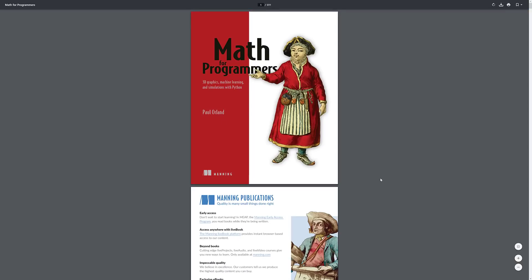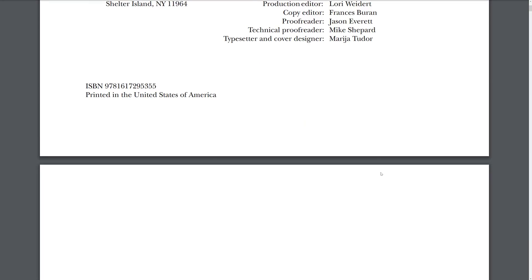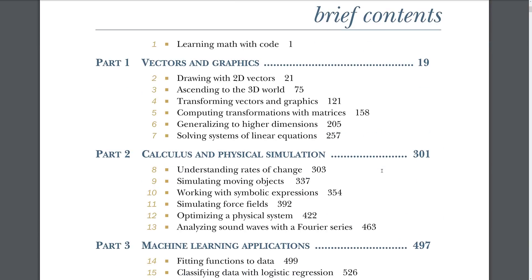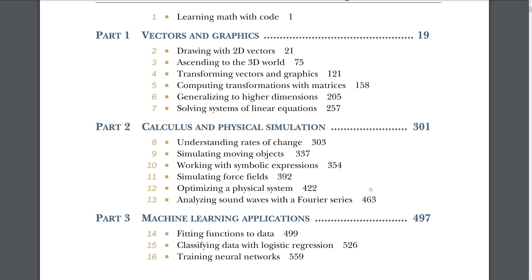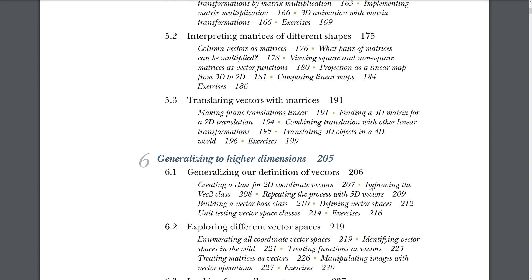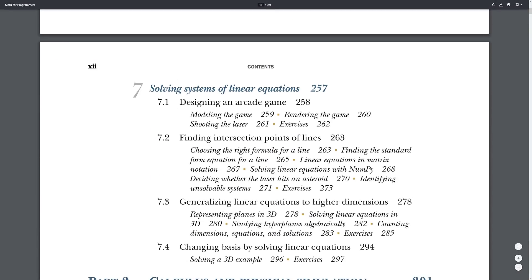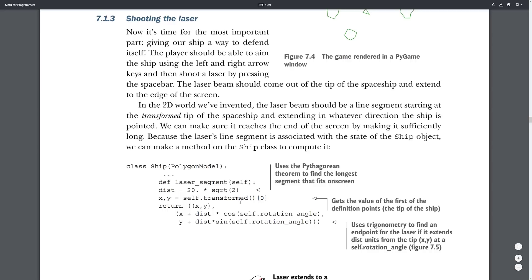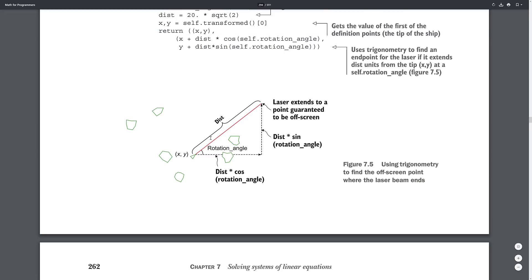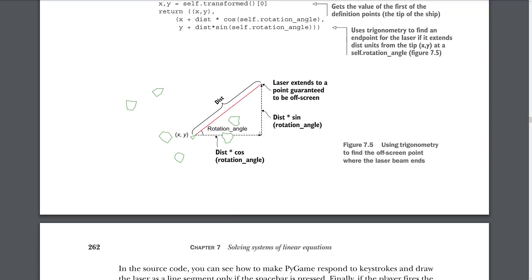Let's open up the star of the show — Math for Programmers, a 33 megabyte file. Looking at the table of contents, you're seeing vectors and graphics, calculus, physical simulation, machine learning applications — very broad categories. Some of the math examples are straight out of game examples, like shooting a laser in a game. They're using Python and Pygame, illustrating the mathematics of game development in pretty reasonably easy to understand real-world examples.